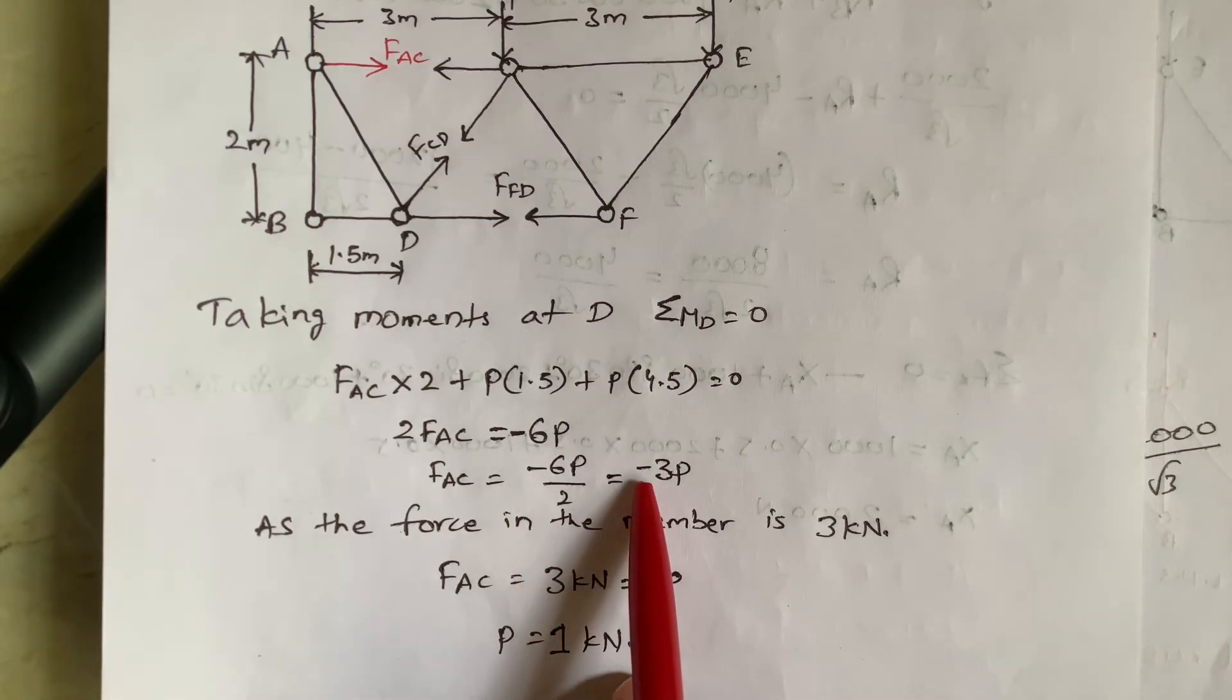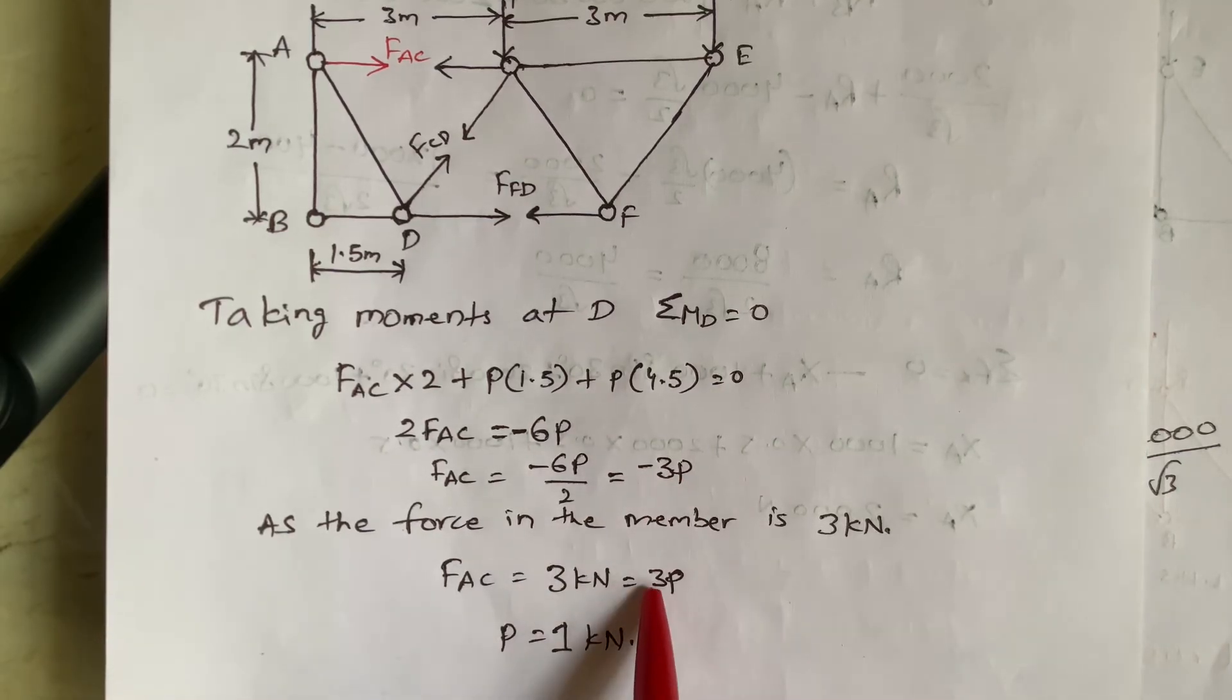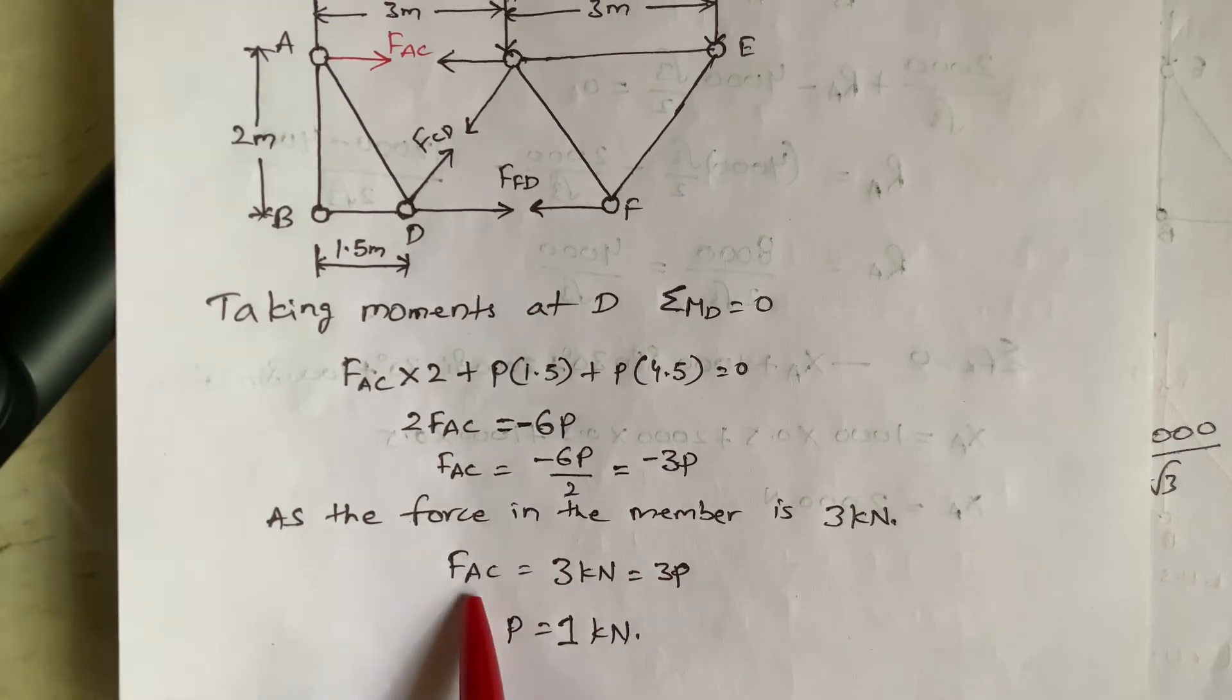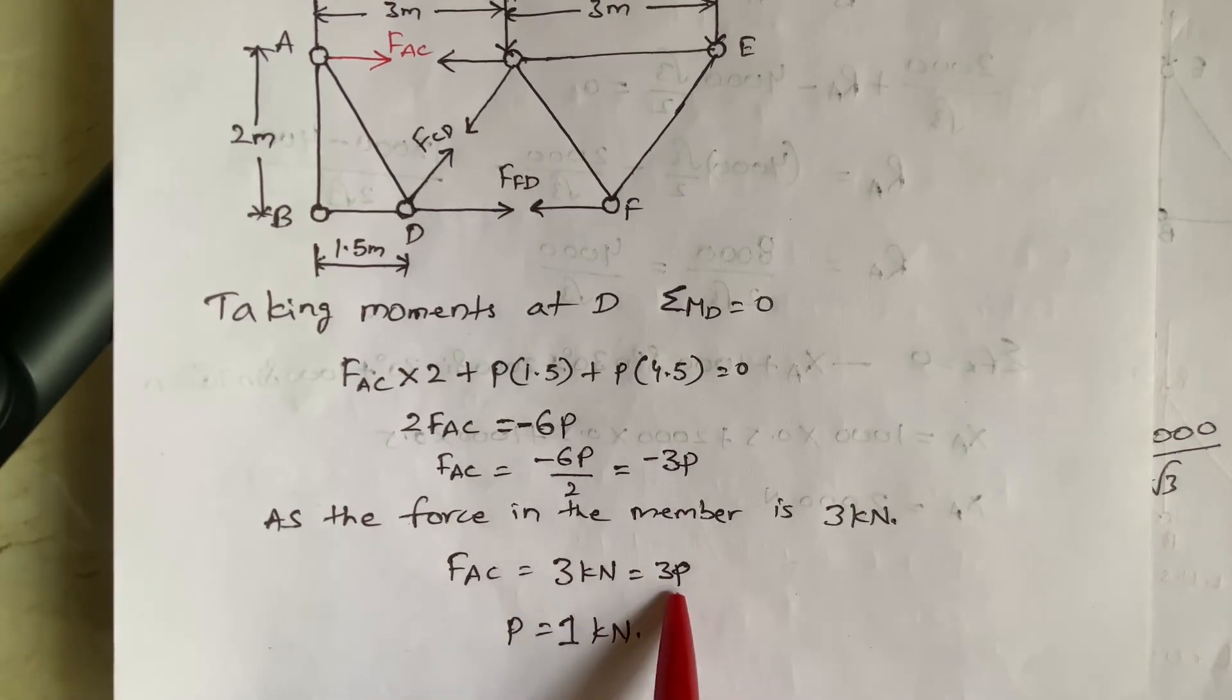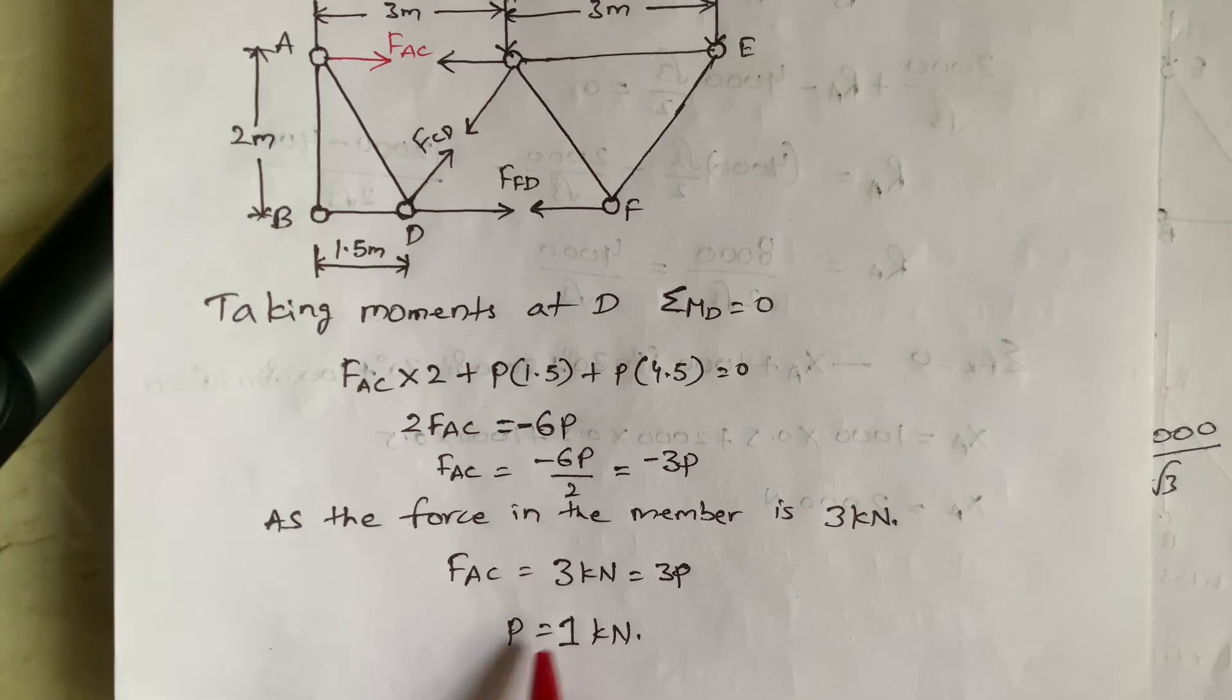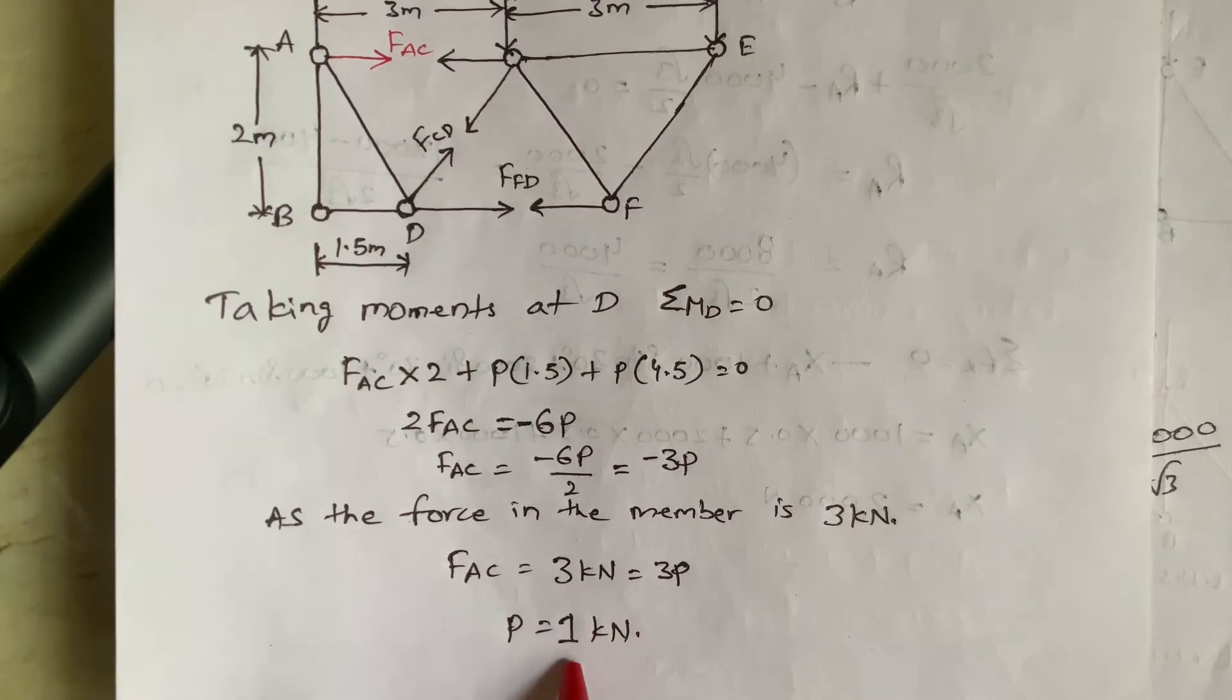This minus is nothing but tension. So I need to mention that minus. So FAC equal to 3kN that equal to 3P. So P equal to 3 by 3. That is 1kN.